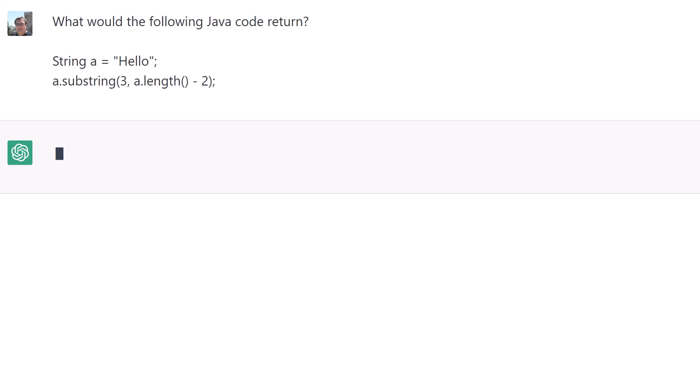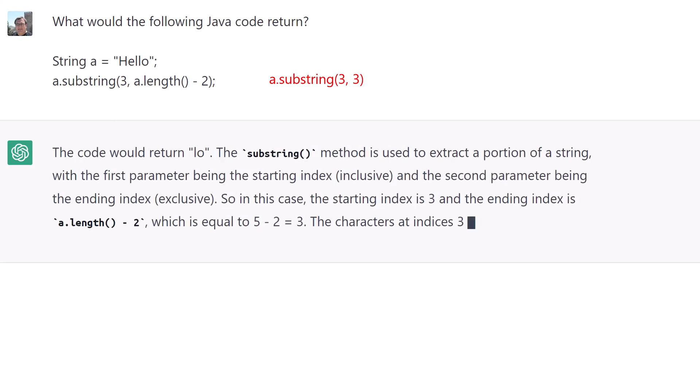In this circumstance, a.length minus 2 calculates to 3. Functionally, the second line of code is equivalent to a.substring(3,3), which returns an empty string. ChatGPT seems to get this, but still says it will return LO.